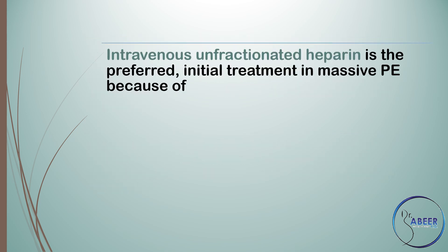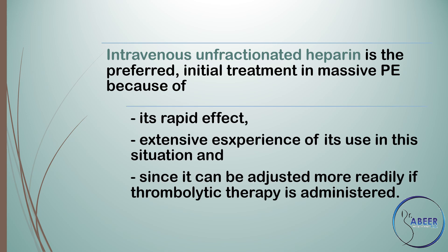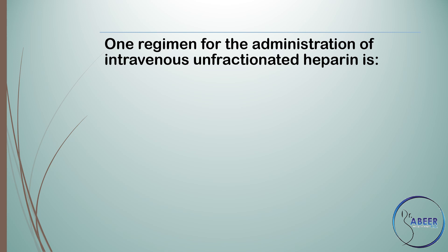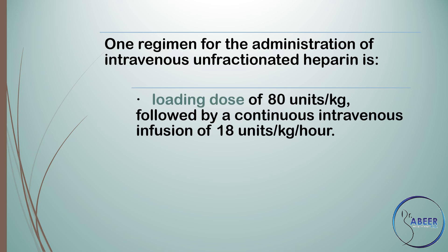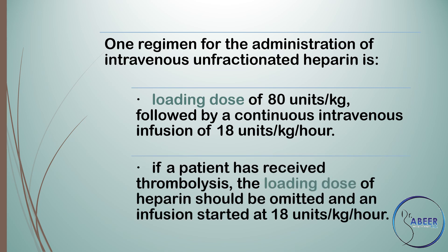Intravenous unfractionated heparin is the preferred initial treatment in massive pulmonary embolism because of its rapid effect, extensive experience of use in this situation, and since it can be adjusted more readily if thrombolytic therapy is administered. One regimen is a loading dose of 80 units per kg followed by a continuous intravenous infusion of 18 units per kg per hour. If a patient has received thrombolysis, the loading dose should be omitted and an infusion started at 18 units per kg per hour.